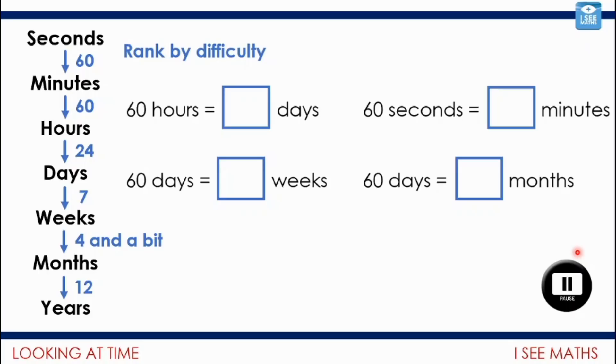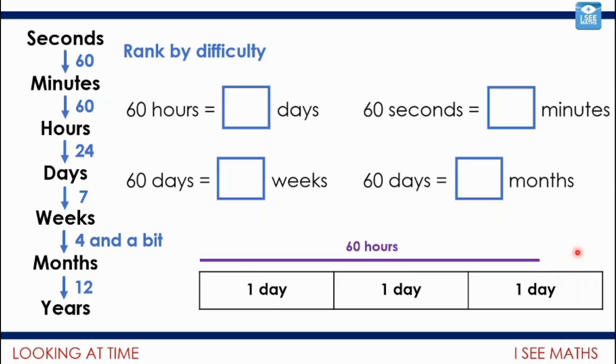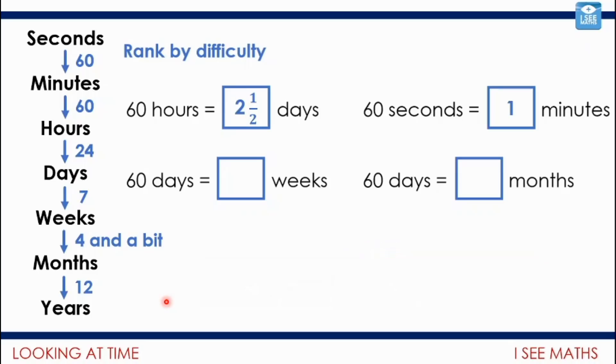Let's have a look. 60 hours, how many days? I'd be thinking, one day is 24 hours. If I keep counting up in 24, it would be less than three days. Two days is 48 hours, so it'll actually be exactly two and a half days. 48 hours, that's 12 hours left to make 60 hours, and that is half of 24, two and a half days. Maybe having that fraction in made it slightly more difficult. 60 seconds, how many minutes? That's just one. I'm not giving you a picture for that one.